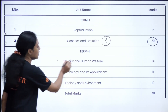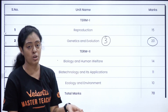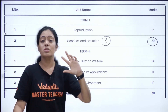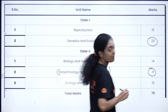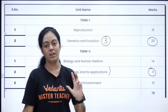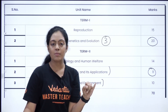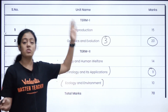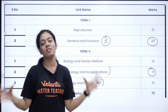Next, Biology and Human Welfare is very conceptual. It includes Human Health and Disease and Microbes in Human Welfare. Then you have Biotechnology and its Application — 11 marks — including Principles of Biotechnology and Applications of Biotechnology. For Ecology and Environment, you have 3 chapters: Organisms and Population, Ecosystem, and Biodiversity and Conservation. This last unit is very easy. Read high-weightage chapters first, then move to the others.